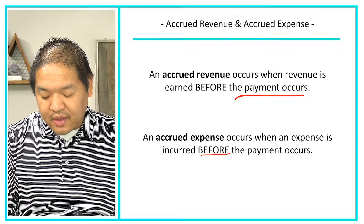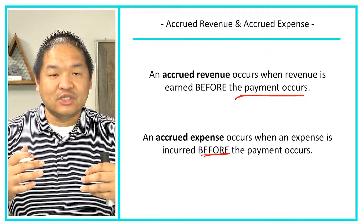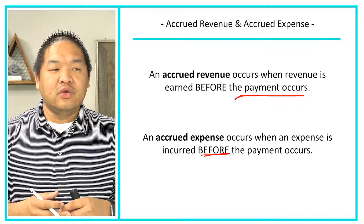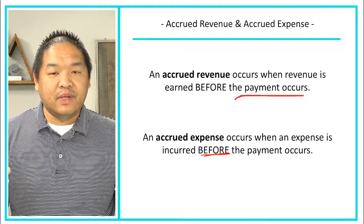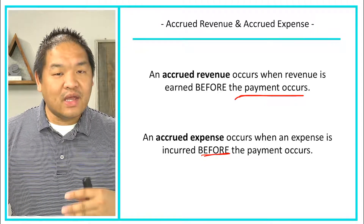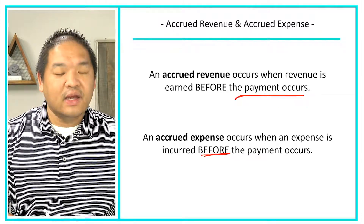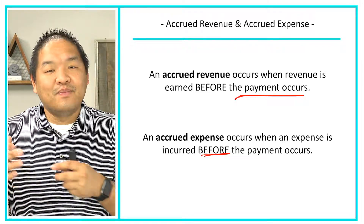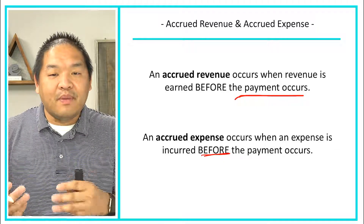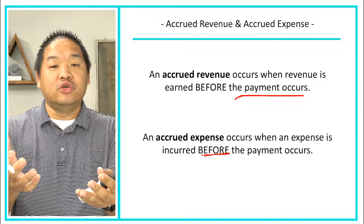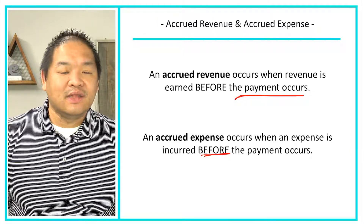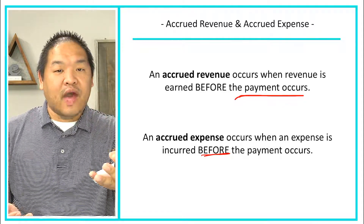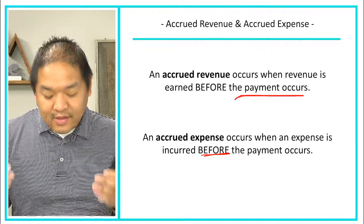An accrued expense occurs when an expense is incurred before the payment occurs. For example, electric companies allow you to use electricity and bill you at the end of the month. I'm incurring the expense now because the electricity is on, but I'm not paying for it yet. The expense happened in the period in which the electricity was used — not when I get the bill or pay it. Many companies will estimate their electricity bill and book it using the accrued expense transaction method.